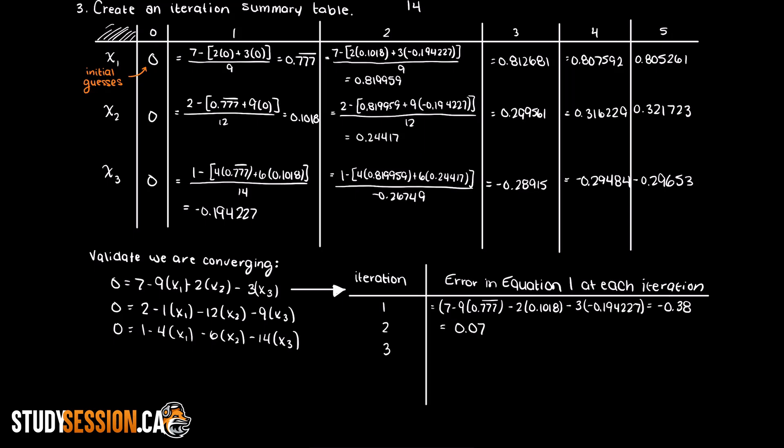As you can see here, with every iteration the absolute value is trending down towards 0, which is exactly what we want. This proves that we are converging on a solution and our error is decreasing. And this makes sense as we knew this would happen when we validated our matrix was diagonally dominant.